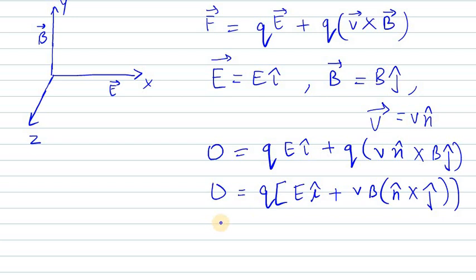We have 0 = q[E î + vB(n̂ × ĵ)]. Removing q from both sides and rearranging, we get vB(n̂ × ĵ) = -E î.